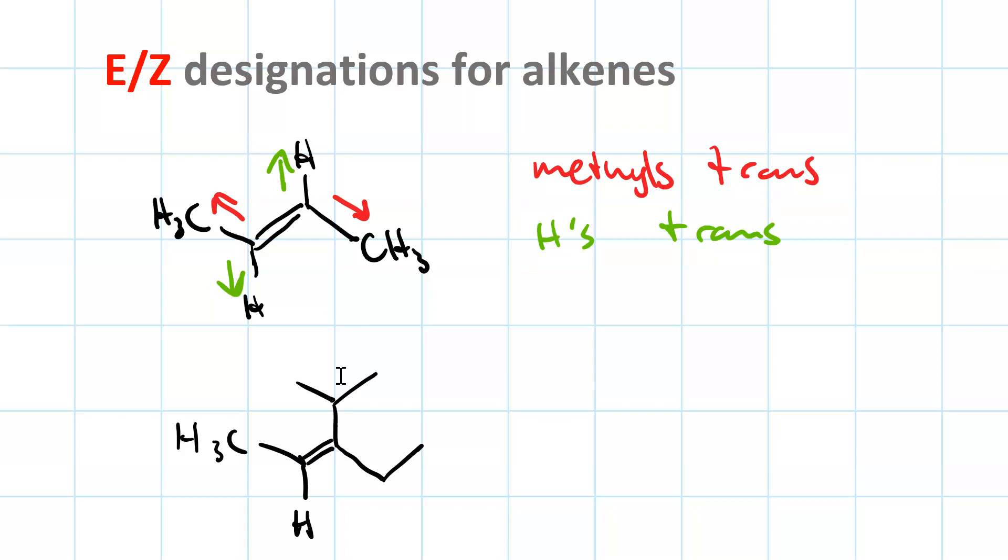How do we differentiate it from its diastereomer? In the diastereomer, the methyl is trans to the isopropyl. The hydrogen is trans to the ethyl. There's got to be a better way than writing a paragraph about each one to describe it. And in fact, there is. And it is the E-Z designation.